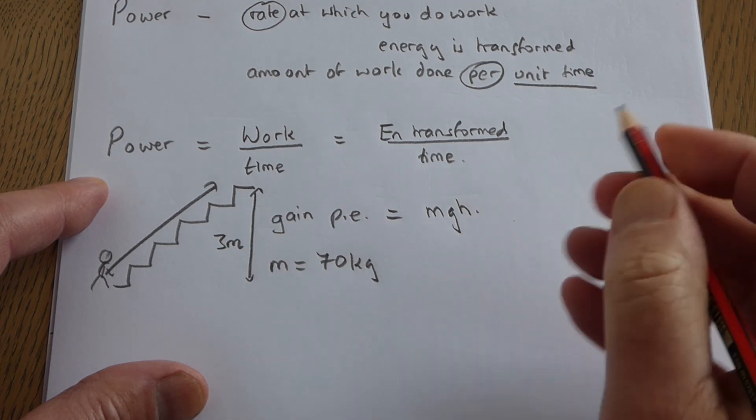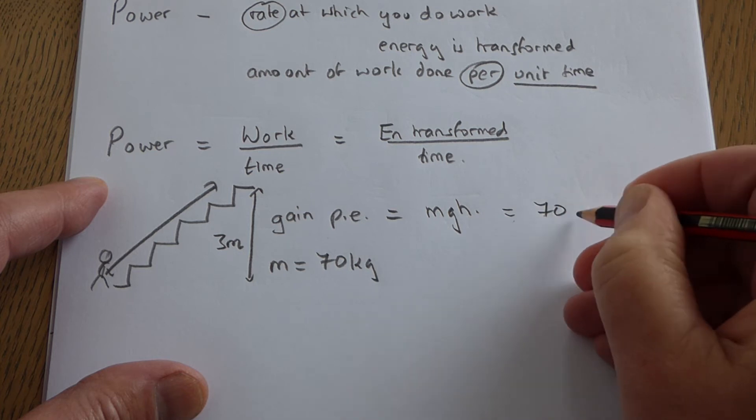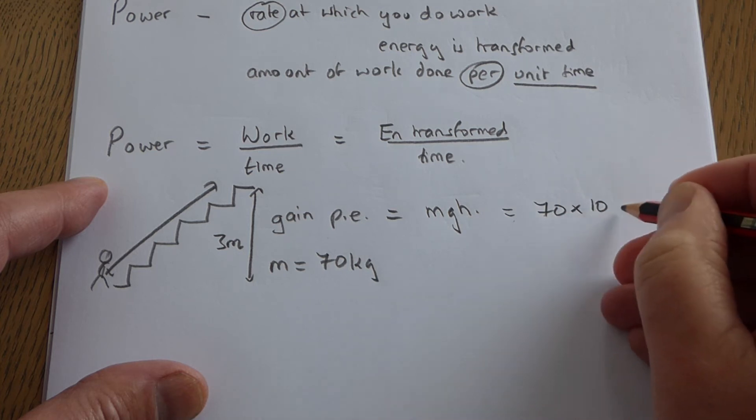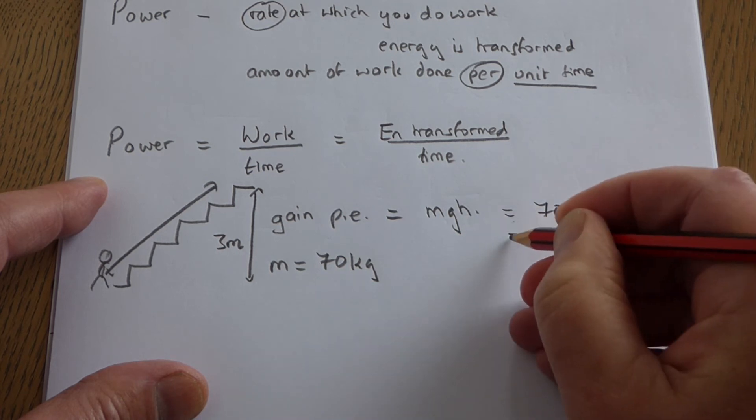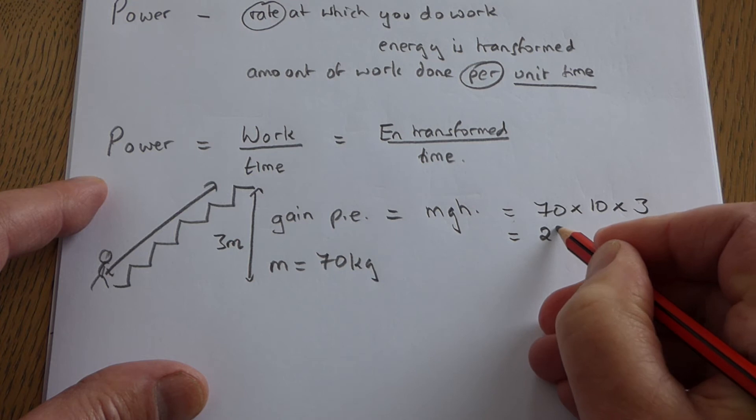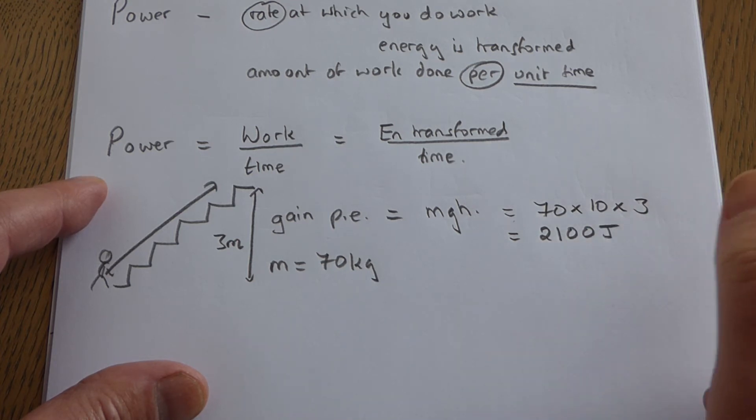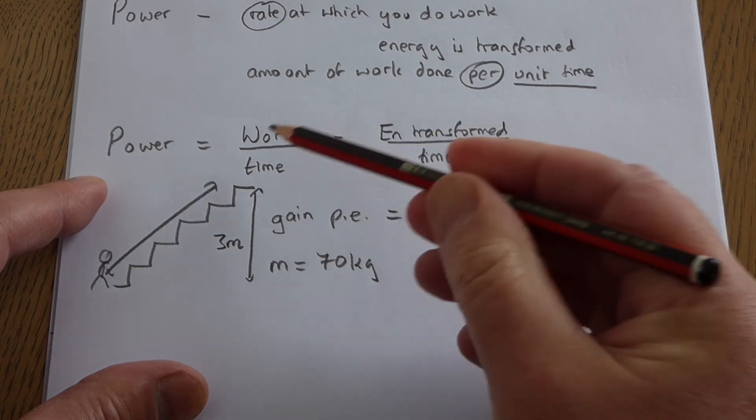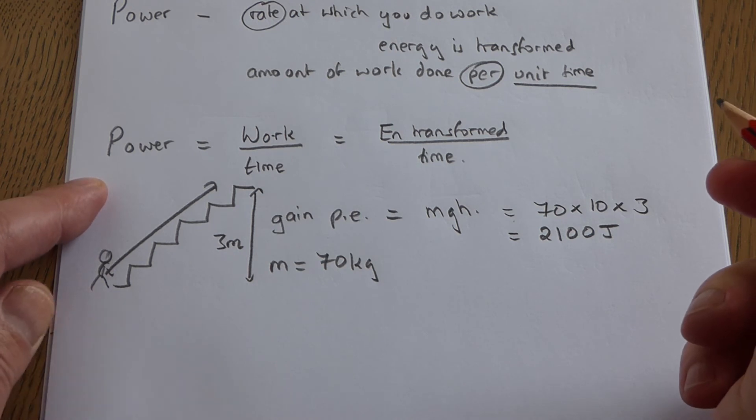Then the gain in potential energy is quite easy to work out. You take your 70 kilograms, you multiply by g which is 10, you multiply by the vertical height of 3, and that will give you the answer of 2100 joules. And that's the energy transformed. It's the work that's been done, and you say you've gained gravitational potential energy.